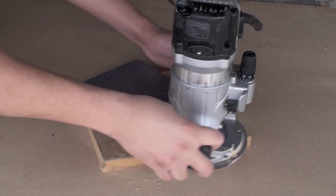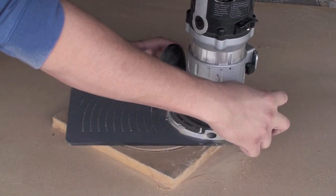First we'll cut the mounting disc using a router and a circle jig. You can also use a jigsaw.